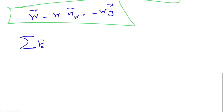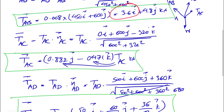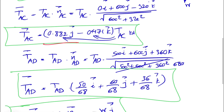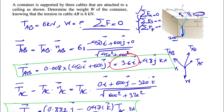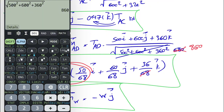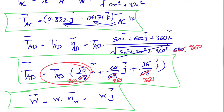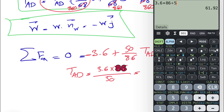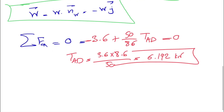Now we apply equilibrium: sum of all forces in X equals zero, same for Y and Z. For the X direction, we pick up the X components of each force. TAB contributes -3.6. TAC has no X component. TAD contributes 500/860 times TAD. Note: I mistakenly wrote 680 earlier — the correct denominator is 860. Setting the X equation to zero and solving gives TAD = 6.192 kilonewtons.